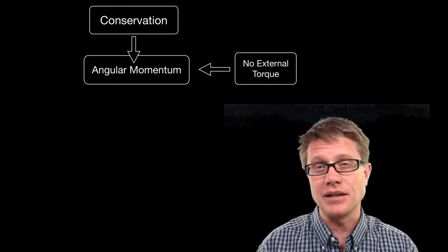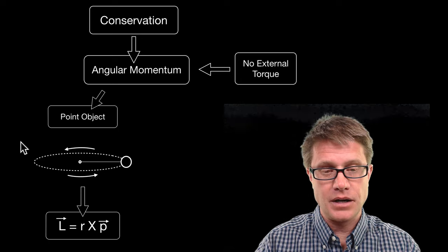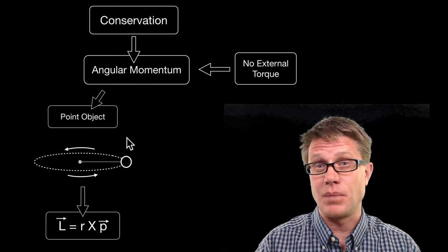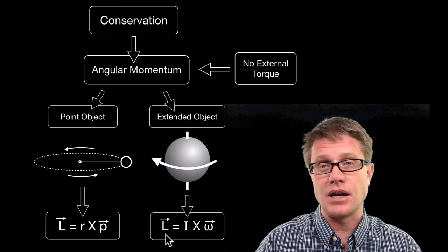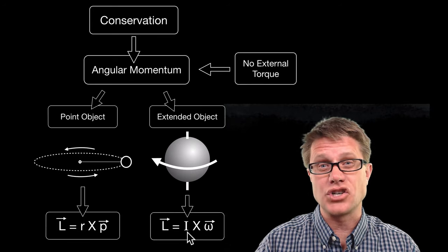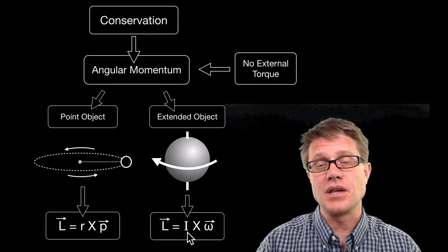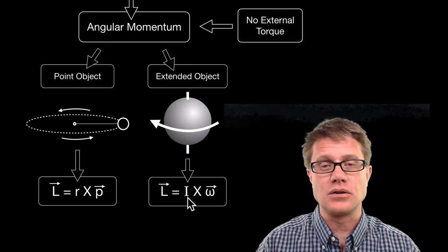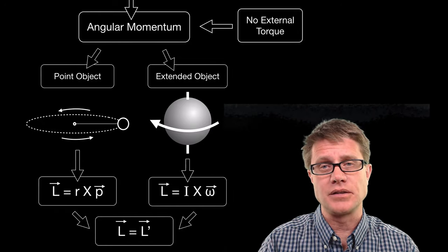Now unlike linear momentum we can calculate angular momentum in one of two ways. If it is a point object in rotation then our angular momentum is equal to the radius times the linear momentum of the object, so how fast it is going in this direction times its mass. If we have got an extended object we use a different equation. If we are an extended object the angular momentum is equal to the moment of inertia, so that is how much material we have and how far it is spread out from the center times the angular velocity of the object. But in both cases as long as there is no net external torque acting on it, the angular momentum before equals the angular momentum we have after.